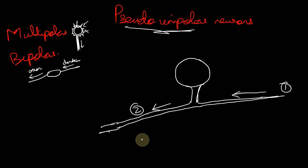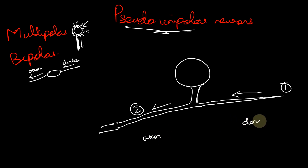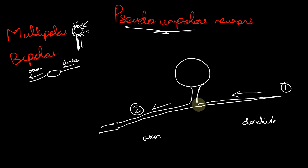Functionally, process number two is an axon and the other is a dendrite. But anatomically, you have only a single axon — that single axon divides into a functional dendrite part and a functional axon part. So this is a pseudo-unipolar neuron.